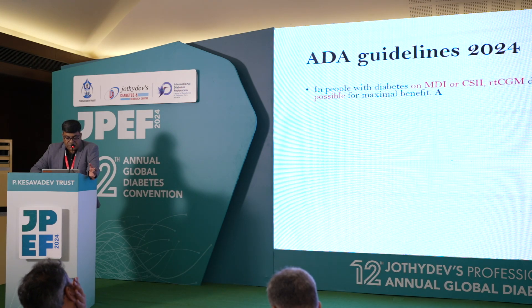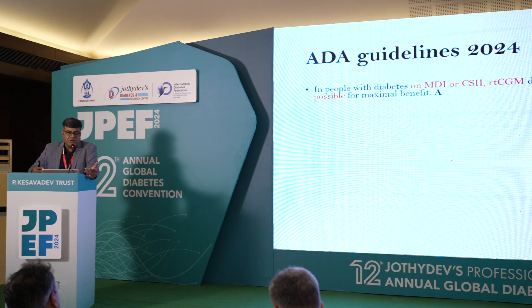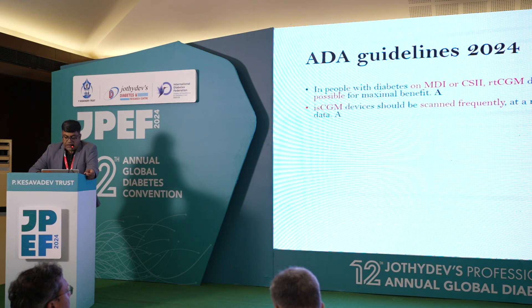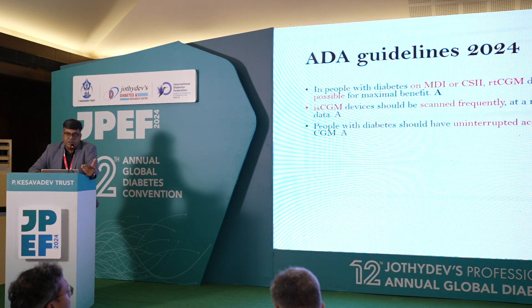In people with diabetes on MDI or CSII, a CGM device should be used as close to daily as possible for maximum benefits. Ideally, a type 1 patient or a patient on MDI should always be on a CGM device — once the device expires after 14 days, they should change it. Intermittently scanned CGM devices should be scanned frequently, with a minimum frequency of at least once every 8 hours; if not, there is a data gap. People with diabetes should have uninterrupted access to these supplies.